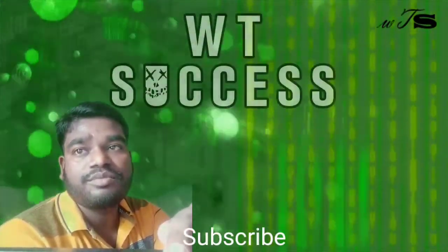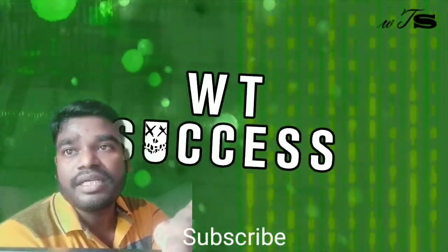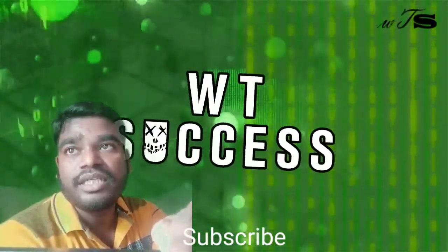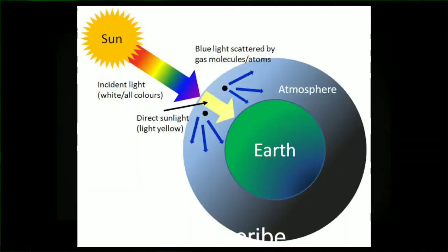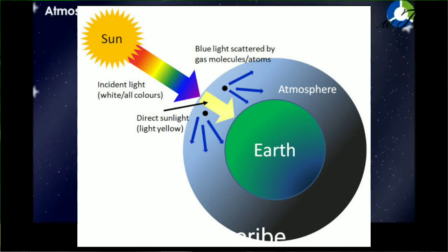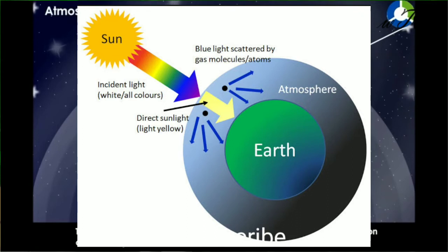If Earth had no atmosphere, there would be no scattering of light. Without scattering, there would be no blue color in the sky. If there is no atmosphere, the sky would appear completely black because there would be totally no scattering of light.